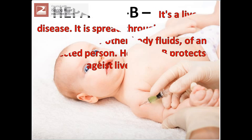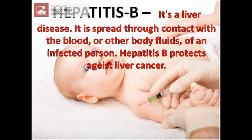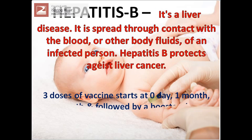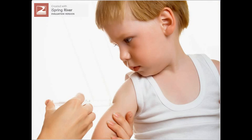Hepatitis B is a liver disease. It is spread through contact with the blood or other body fluids of an infected person. Hepatitis B protects against liver cancer. 3 doses of vaccine starting at day 0, 1 month, and 2 months, followed by a booster dose after 1 year, required for lifetime protection.